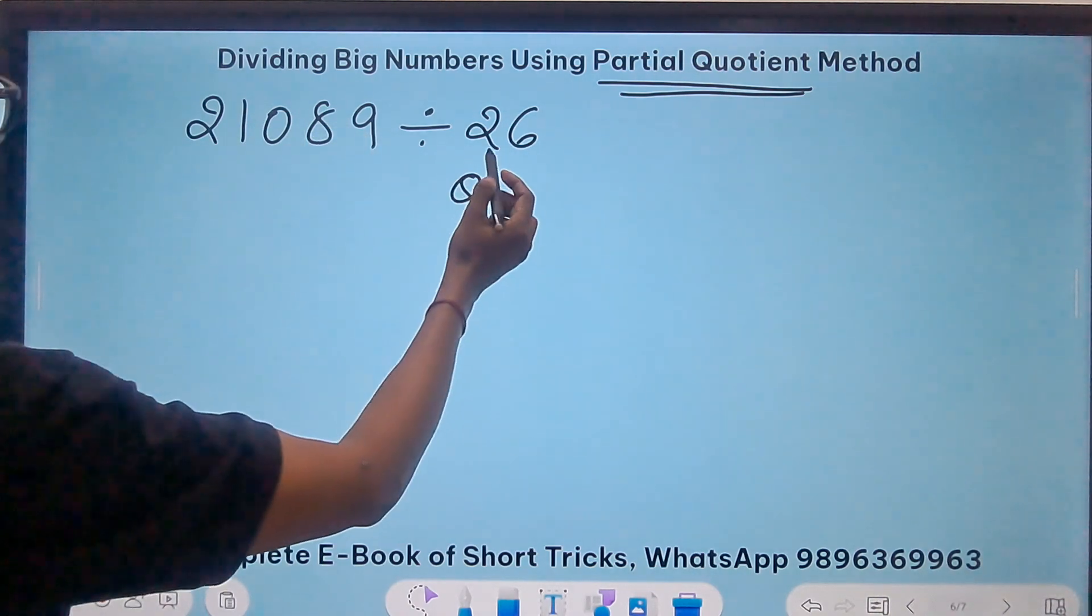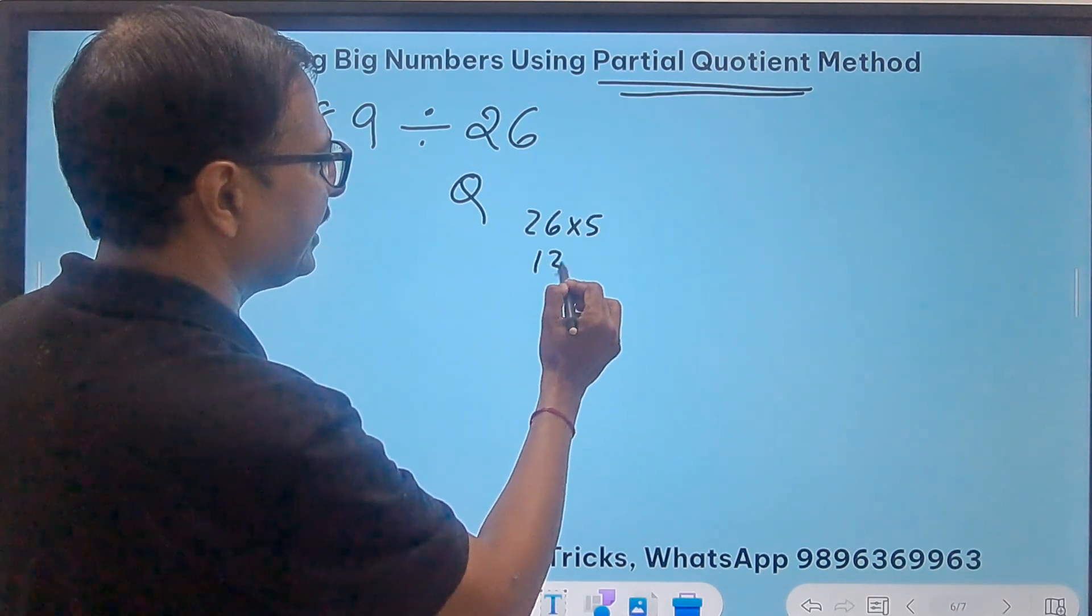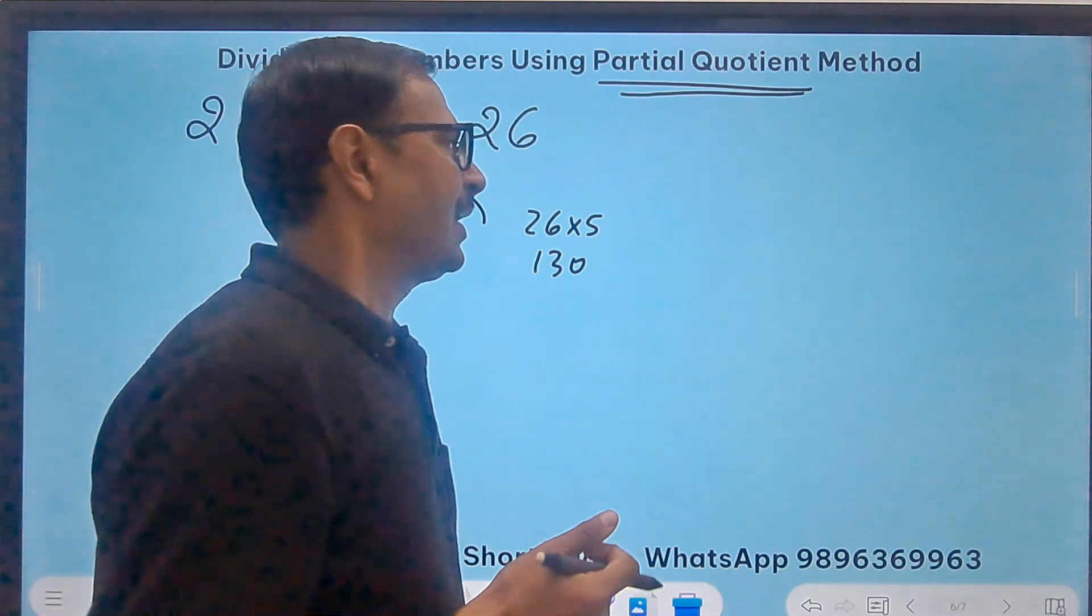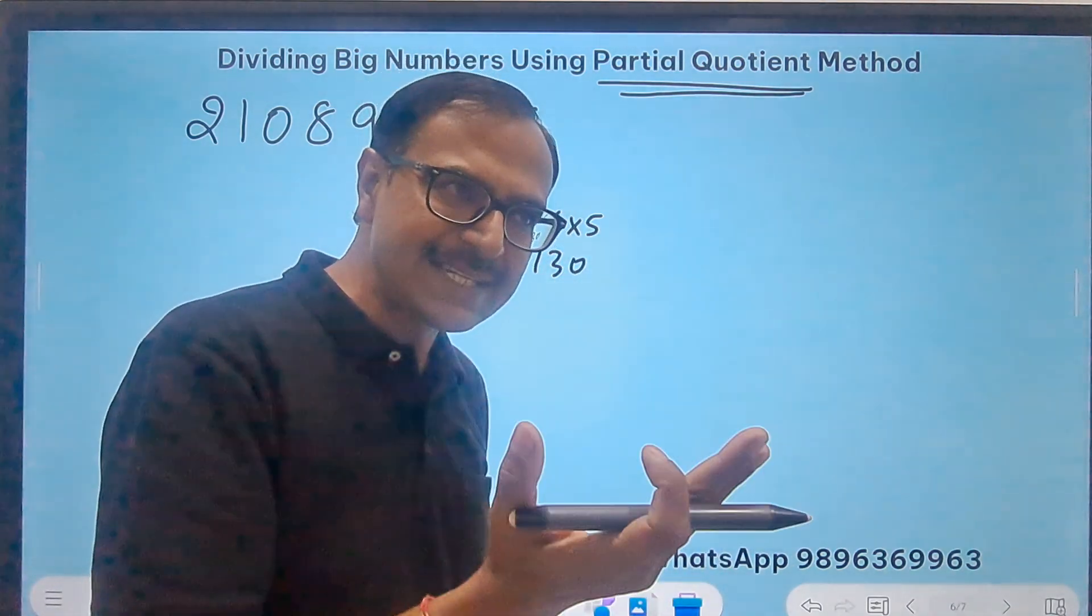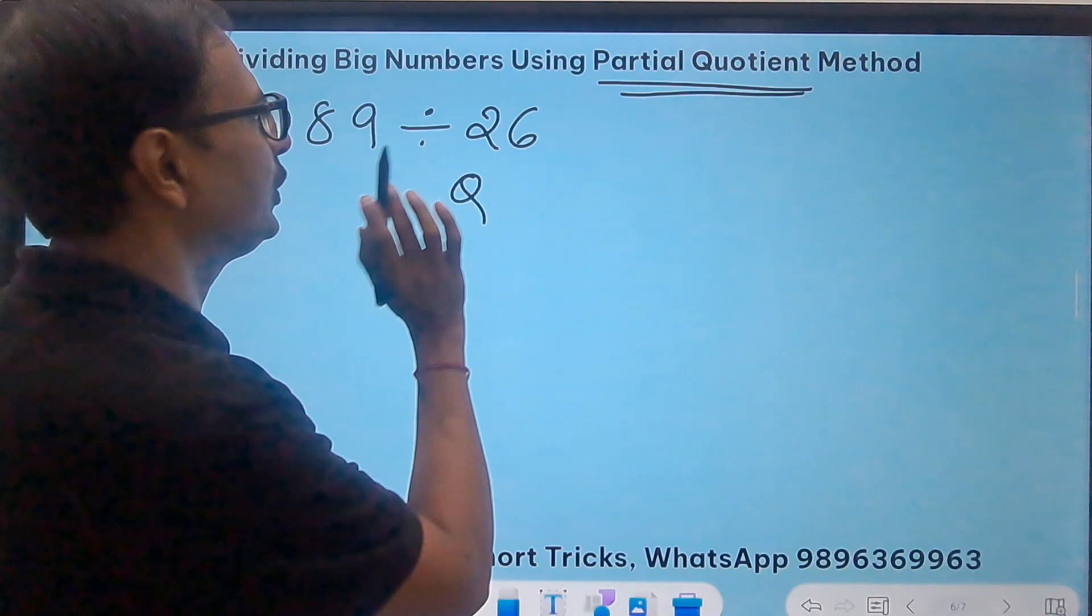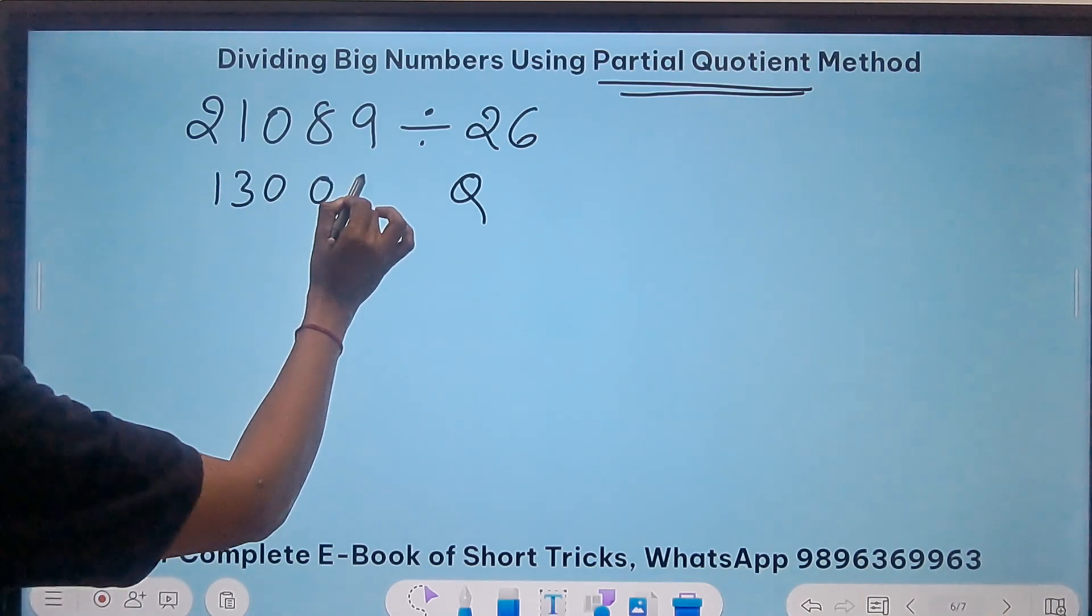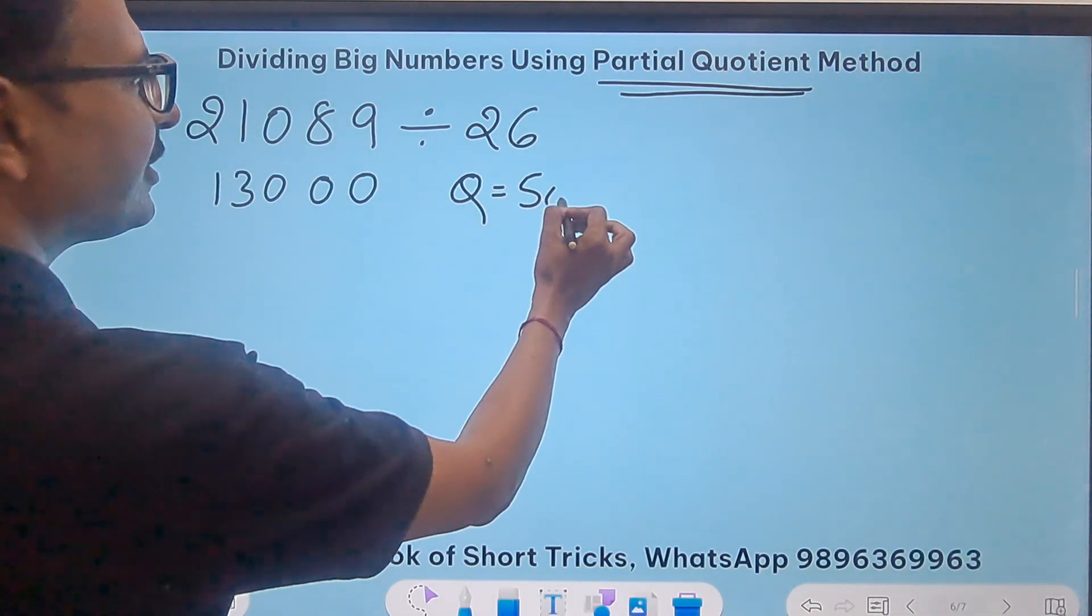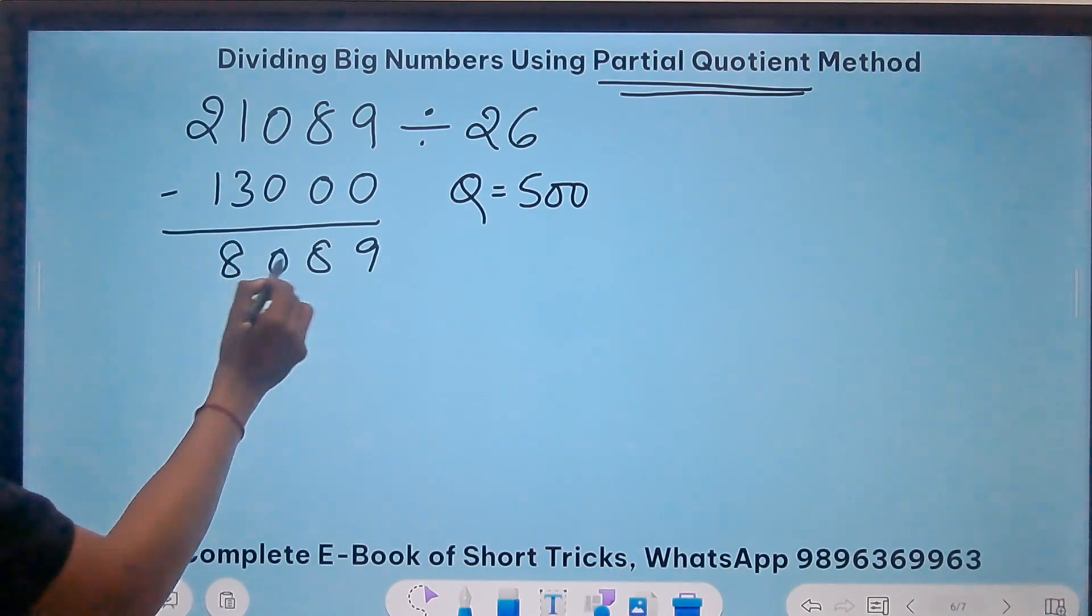I'm going to write the quotient here and subtract something from this dividend 21089. I don't know the 26 times table, but I know that 26 multiplied by 5 gives me 130. I have to be in my comfort zone. 26 into 5 is easy because 26 into 10 is 260, half of that is 130. If I put two zeros here, the quotient will be 500, so 26 into 500 is 13000. Subtract this and you get 8089.